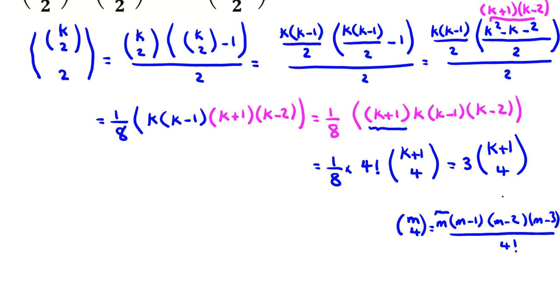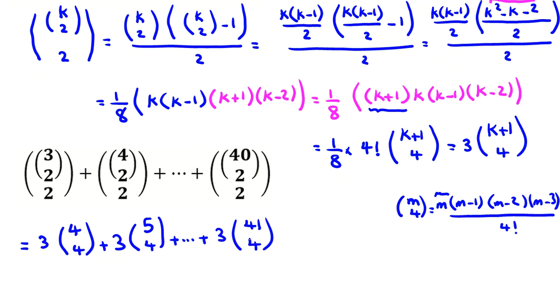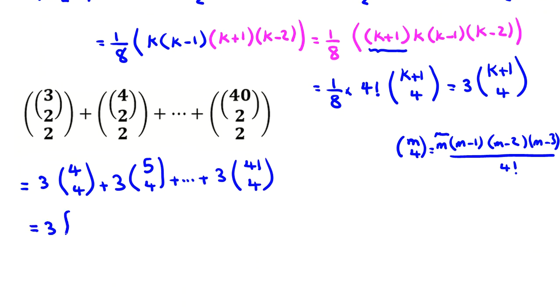Now we can apply Hockey-Stick or Jiu Shichie identity. The problem wants this. Here K is 3. So it will be 3, K is 3. Replace K with 3. It will be 4 choose 4. Now here K is 4. Then it will be 3 times 5 choose 4. And up to the last one. It will be 3, K is 40, it will be 41 choose 4. And now, if we factor from 3, then we have 4 choose 4 plus 5 choose 4 plus 41 choose 4.